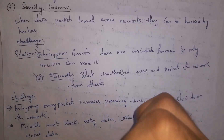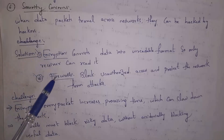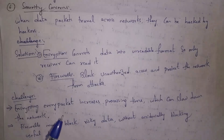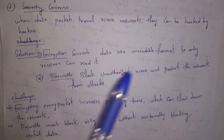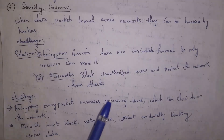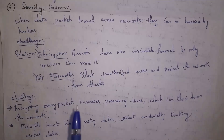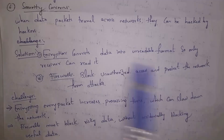The last challenge is security concerns. Billions of people use the network to transfer data, and hackers may steal our data. There are two solutions: encryption and firewalls. Encryption means converting a message into an unreadable format — so even if a hacker gets the data, they cannot understand it. The receiver then converts the encrypted data back into readable format. Firewalls block unauthorized data to protect our data from hackers. However, the challenging part is that encrypting every data packet is time-consuming and slows the network, and sometimes firewalls may accidentally block important data.